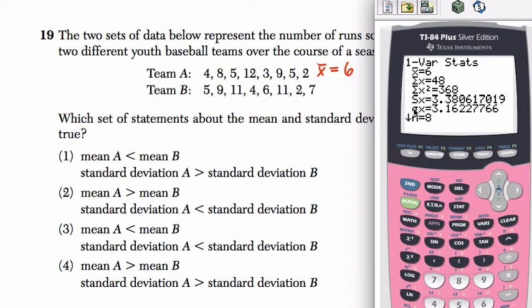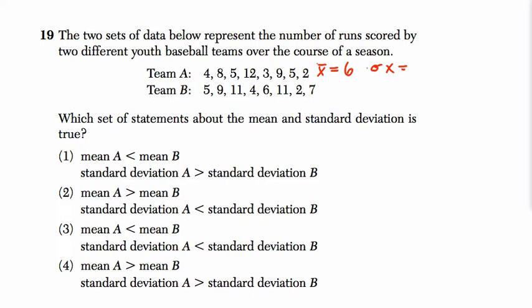We'll use this standard deviation down here because we have all the data. So our standard deviation is about 3.16. So I'll write that down. Standard deviation for this data point is about 3.16. And then we do the same thing for the second team.